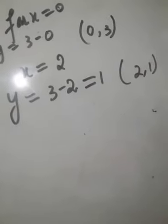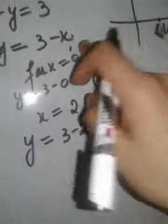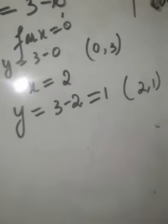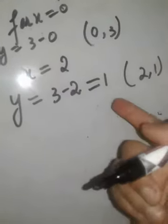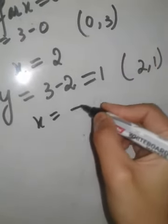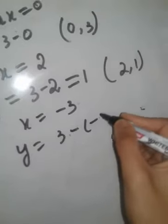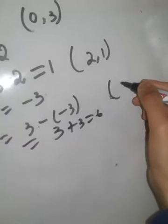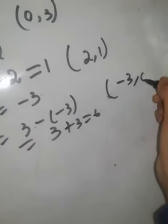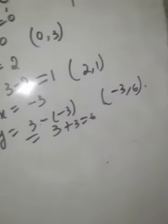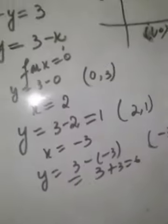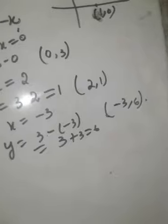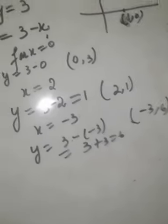It is not necessary to put only positive values; you can plug in any value, including negatives. For example, for x equals minus 3, y equals 3 minus (minus 3), which is 3 plus 3, equals 6. So another solution is (−3, 6). You have now found three solution sets, and in fact you can find infinitely many solutions to a linear equation in two variables.